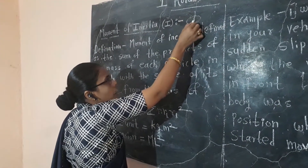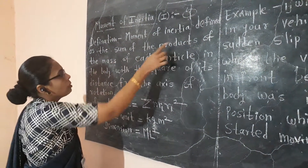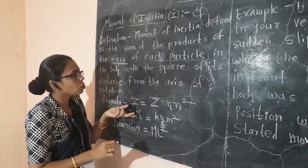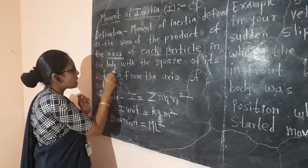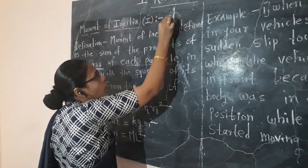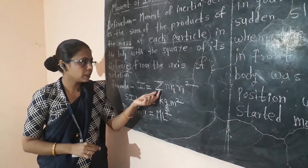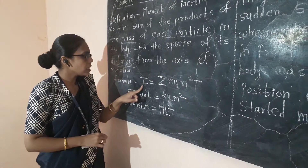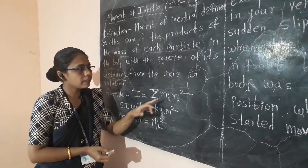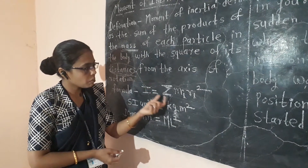The mass of each particle of the body is multiplied by the square of its distance from the axis of rotation. This is the definition in mathematical form. The formula is: I (moment of inertia) equals the summation of mass times distance squared from the axis of rotation — that is, I = Σmr².